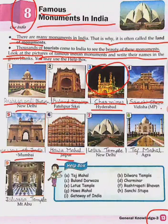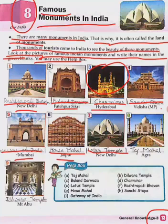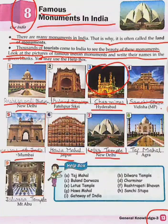Our seventh monument is Lotus Temple. The spelling is L-O-T-U-S, Lotus, T-E-M-P-L-E, Temple — Lotus Temple. Lotus Temple is situated in New Delhi.